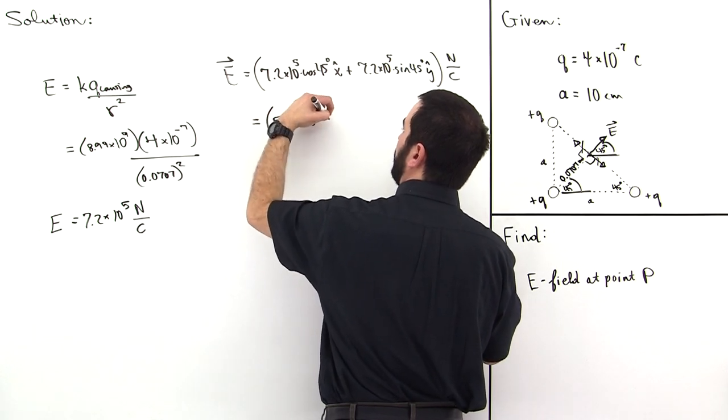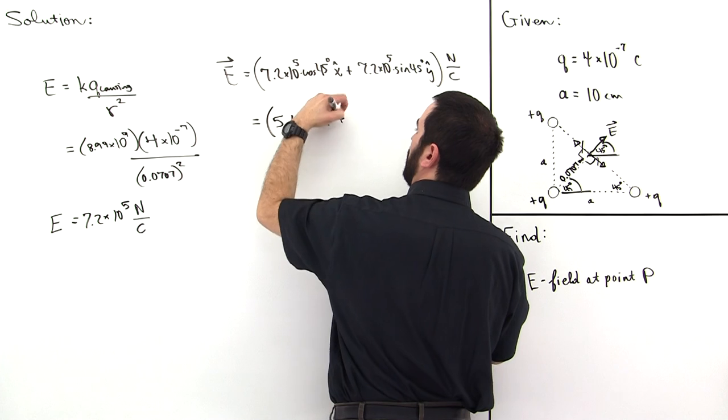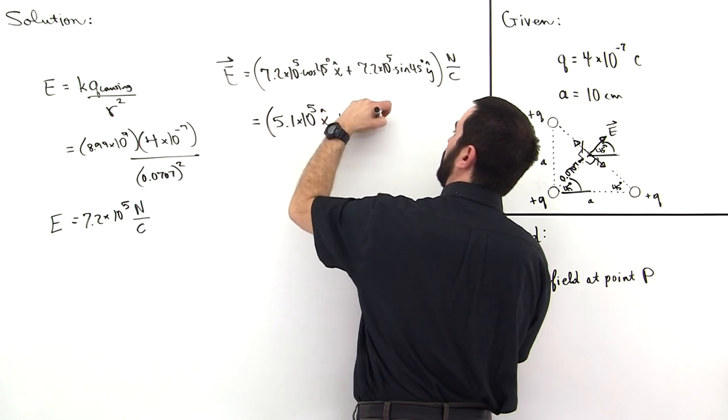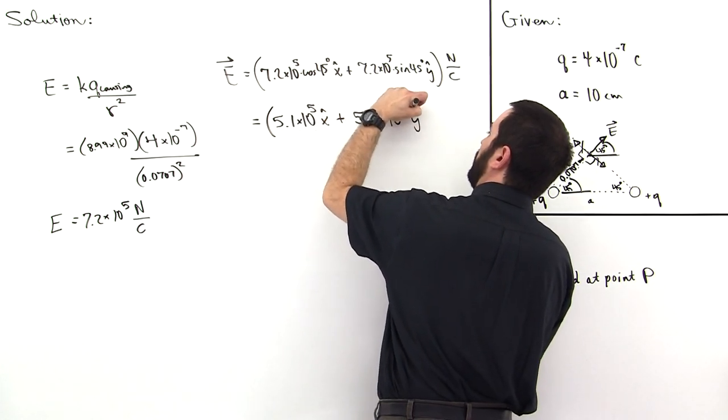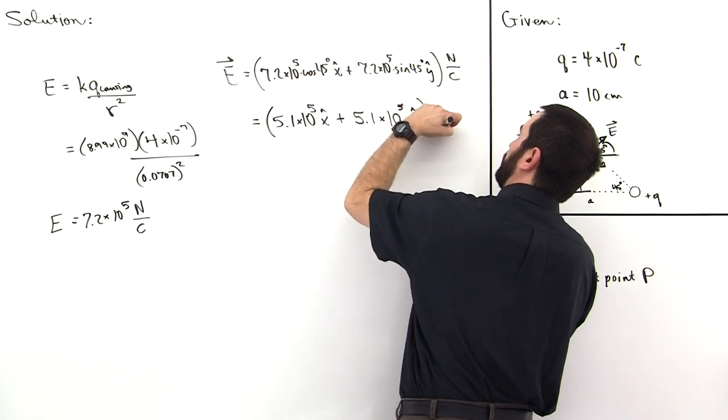So this is 5.1 times 10 to the fifth x hat plus 5.1 times 10 to the fifth y hat newtons per coulomb.